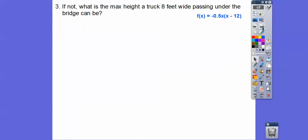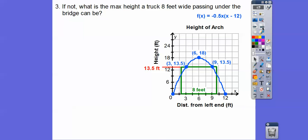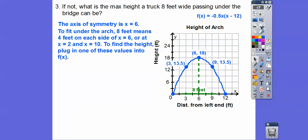So if not, what is the maximum height a truck that's 8 feet wide that passes underneath the bridge can be? Well, if it's 8 feet wide, the axis of symmetry is at x = 6. So if we're going to go 8 feet wide, that means we're going to go 4 feet that way and 4 feet that way from x = 6. So that's going to take us to x = 2 and x = 10, because 6 - 4 is 2 and 6 + 4 gives us 10.